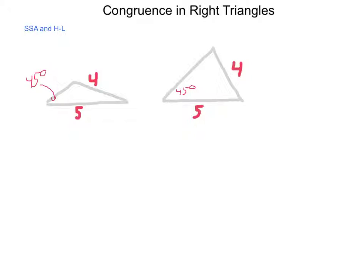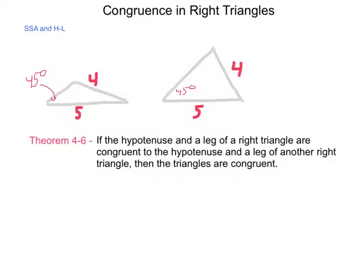So this gives us theorem 4-6. If a hypotenuse and a leg of a right triangle are congruent to the hypotenuse and the leg of another right triangle, then the triangles are congruent. And the reason that this works is if I have a hypotenuse on two different triangles that are congruent and a single leg on each triangle that are congruent to each other,